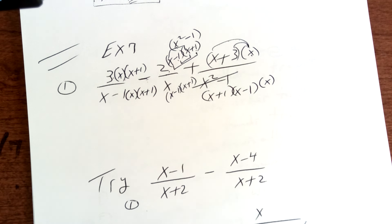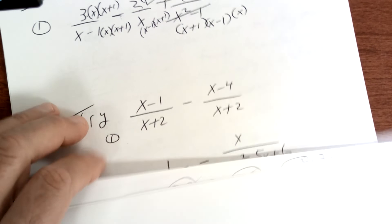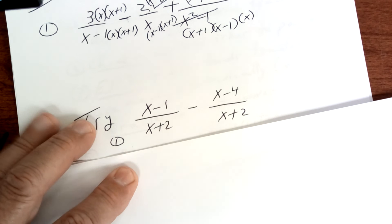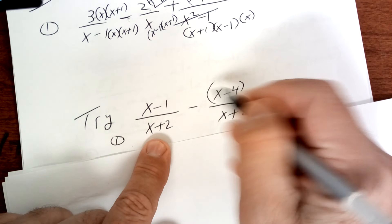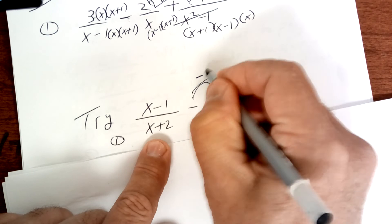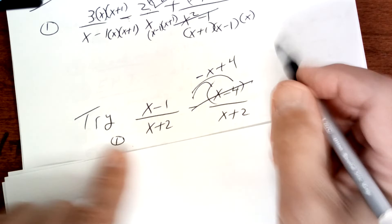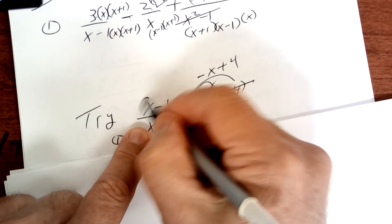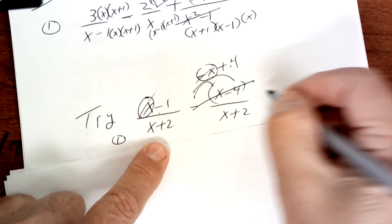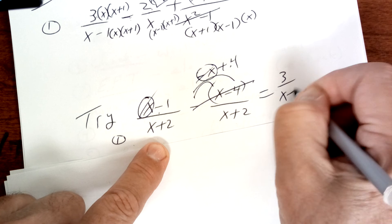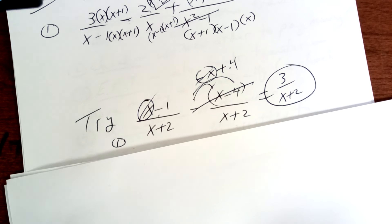Copy this one down. For number one, you already have the same denominator, but you have to distribute the negative, so that becomes −x + 4. The x terms cancel out and 4 − 1 is 3, so the answer is 3 over (x + 2) and then you're done.